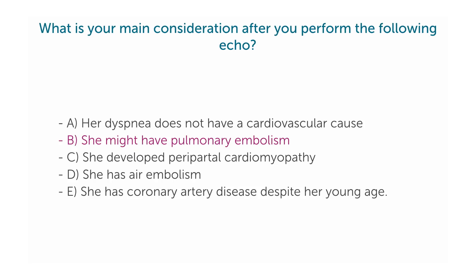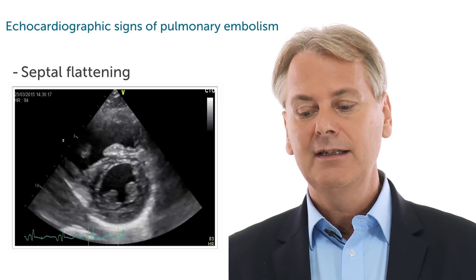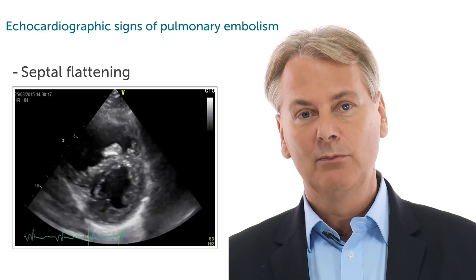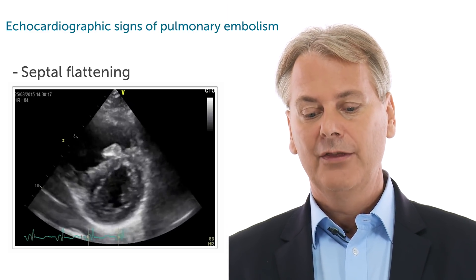The correct answer in this young woman, of course, is she might have pulmonary embolism. Let's take a look at the echocardiogram again. When you take a look at the short axis view, you will see an abnormal motion of the interventricular septum.